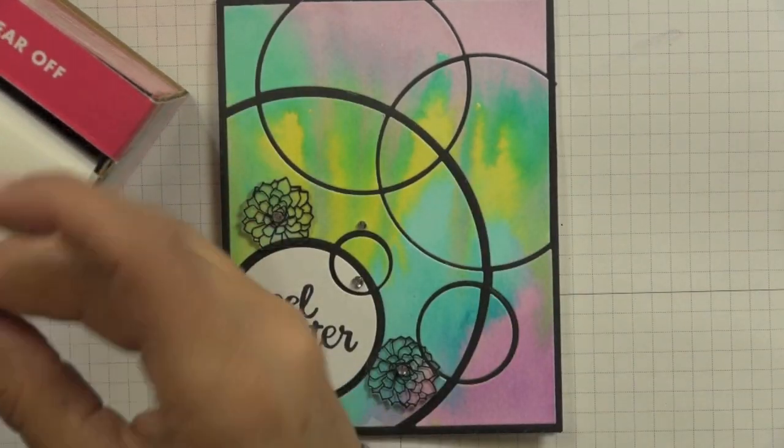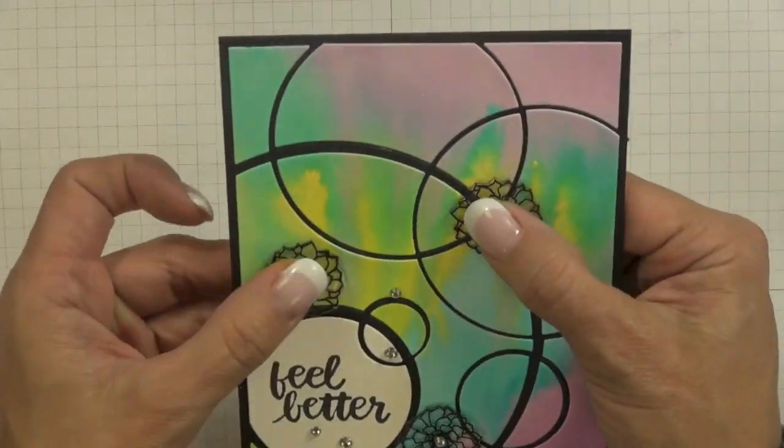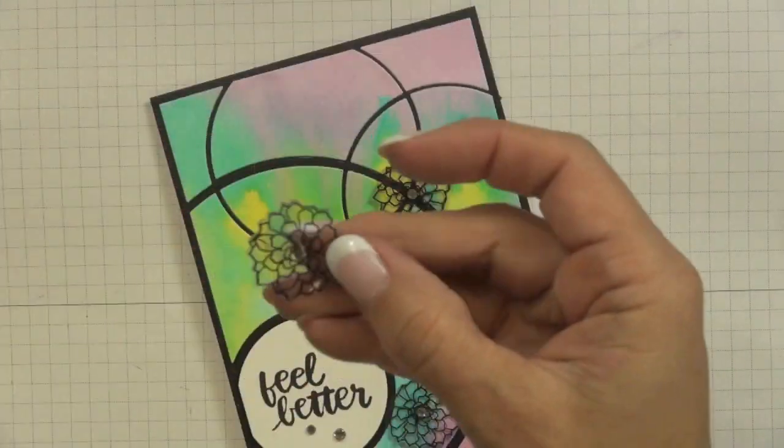I also added a scattering of three different sizes of rhinestones around the sentiment just to kind of help give the card a little bit more sparkle but to balance out the rhinestones and the center of the flowers.